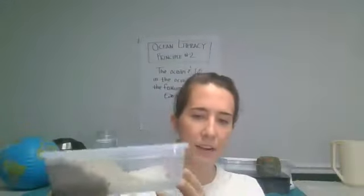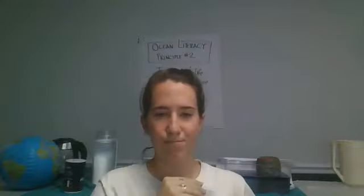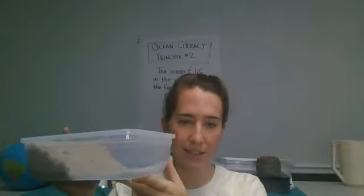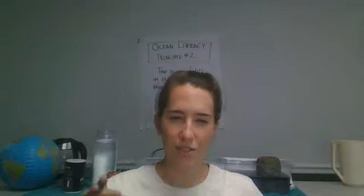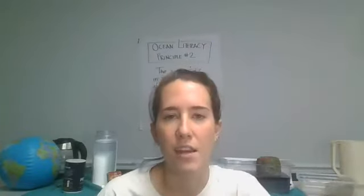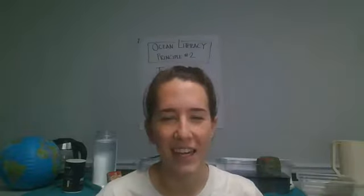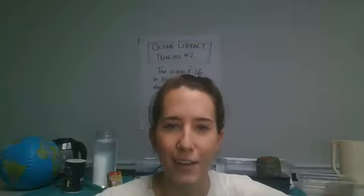For this first activity you're going to need a Tupperware container or some sort of clear container, some sand, some water, and something to push the water — I'm going to use a Tupperware lid. This is going to be our beach. If you live near the beach, you've seen the way it changes over time. After certain events like hurricanes or large storms, you can see large changes in the structure of that beach. We're going to mimic that today and look at how waves change the beach through erosion.